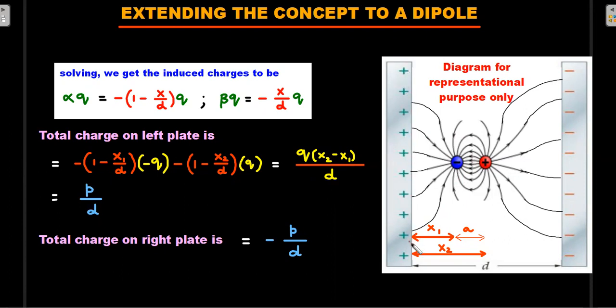Similarly, on the right plate, again if you use this formula for each of the charges' contribution for the induced charge on the right plate, you should end up getting negative of what you got on the left plate, and it comes out to be independent of the position of the dipole. Initial instinct could have been for people to think if the charge is asymmetrically placed—it's not exactly at the midpoint—still you will have equal and opposite magnitude charges on the plates, which is a very non-intuitive and interesting answer that you will get.